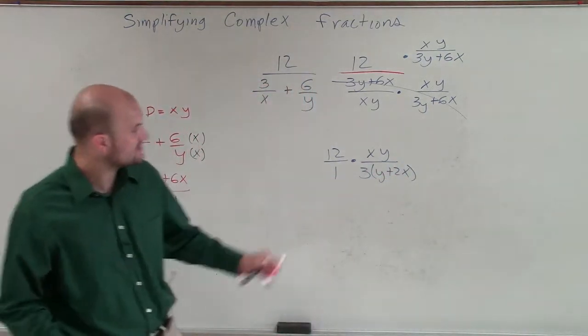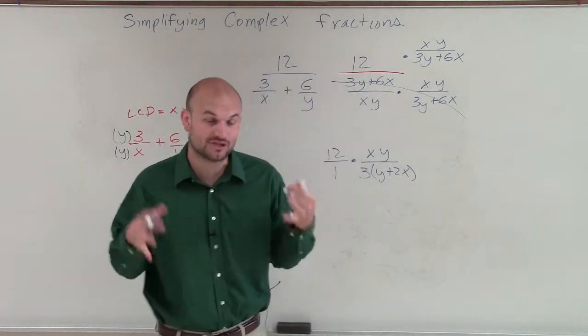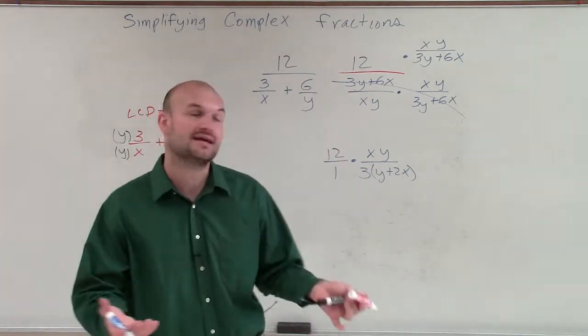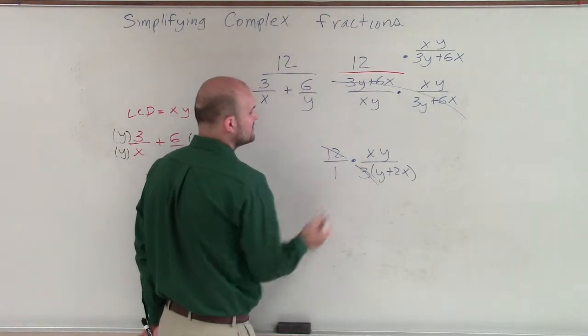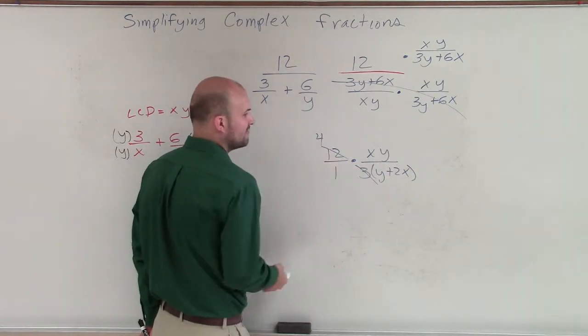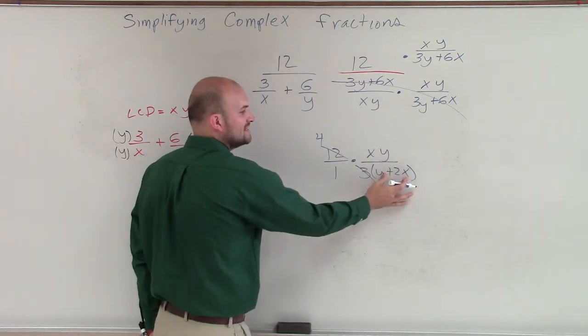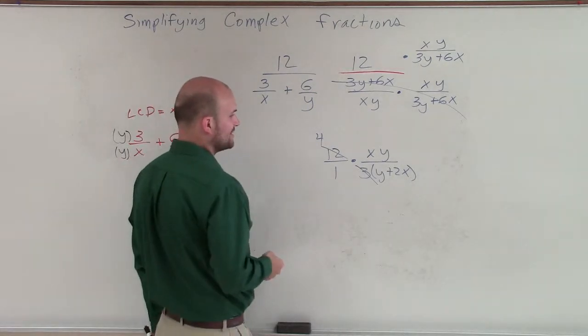All right, now we can see we have multiplication going across. The only thing I have addition, it's inside my parentheses. So it's contained with inside the parentheses. However, now I can divide out terms as needed, only across multiplication. So I can take 12 divided by 3, which is going to leave me with a 4. I cannot simplify the xy with these x and y's because these are separated amongst addition. And we cannot divide out amongst addition or subtraction.